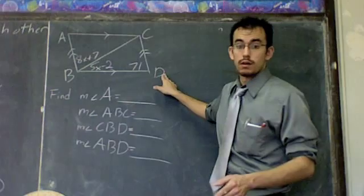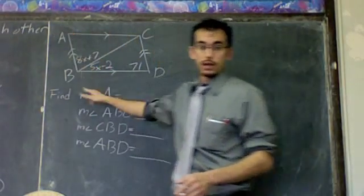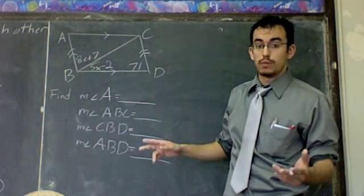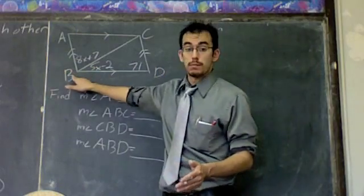I know that angles B and D are supplementary, just like D and C, and C and A, and A and B. All of them, any two pairs that you pick that are next to each other, add up to 180. So I'm going to focus in on D and B.